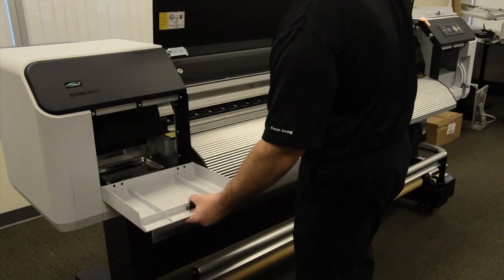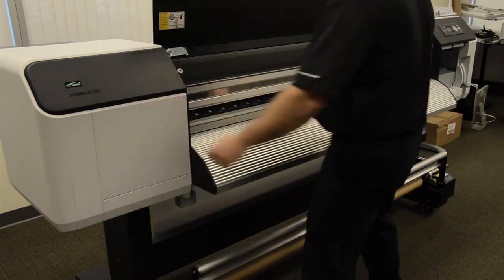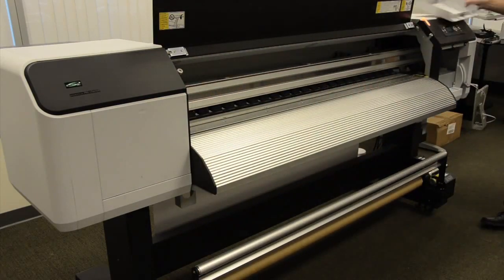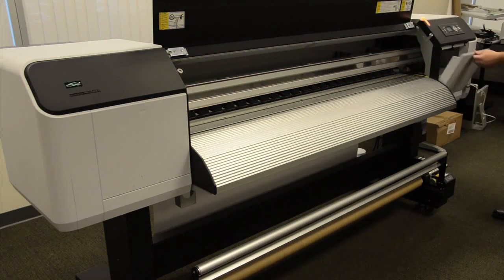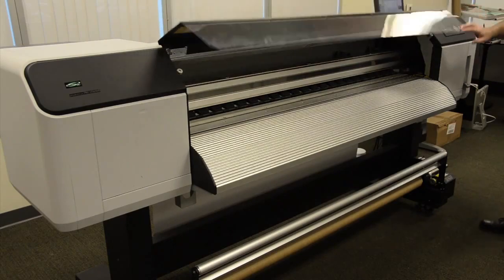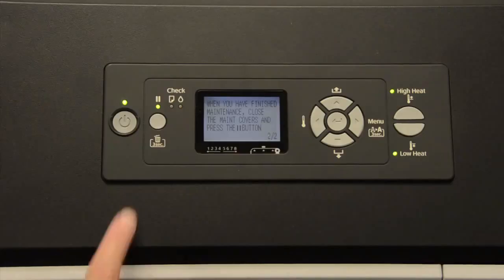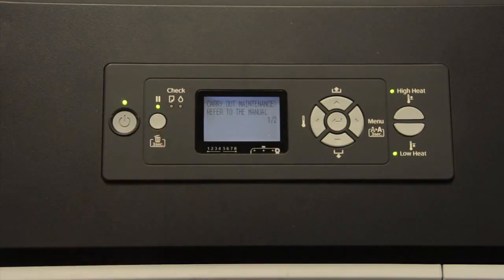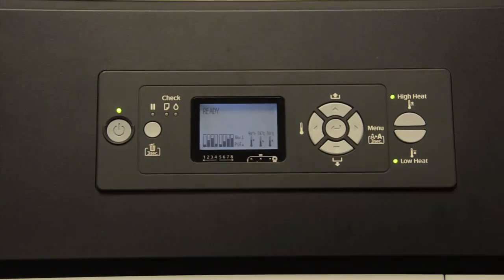Once we've completed these maintenance steps, we can now replace each maintenance cover, both the left and right side. We can close the top cover, and now the GS6000 will instruct us to hit the pause button to have the head return to its home position.